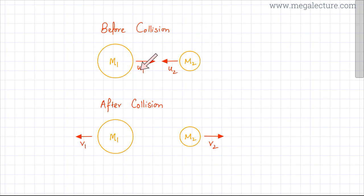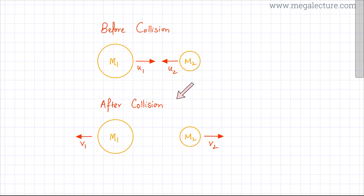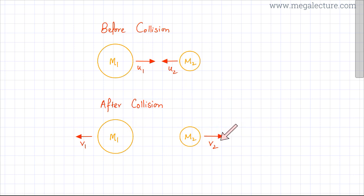The initial speed is U1 for particle M1, and the initial speed for particle M2 is U2. They're approaching each other and they collide. After the elastic collision happens, the particles go their separate ways in opposite directions — particle M2 traveling with final velocity V2 and particle M1 traveling with final velocity V1.